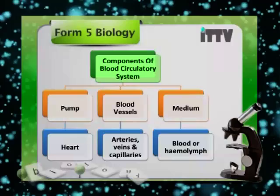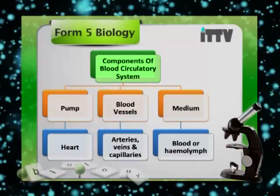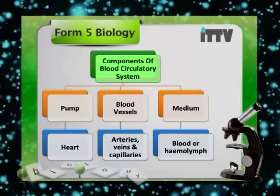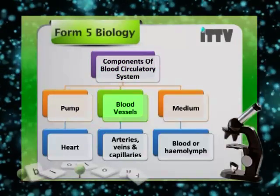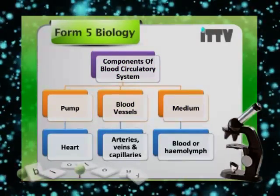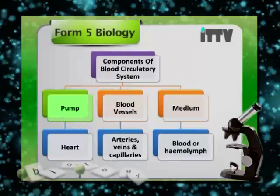What is a circulatory system? A circulatory system is the flow of fluids toward all the organs, tissues, and cells in an advanced organism such as a human or an animal, to transport the required nutrients and to eliminate the waste products. Now let us see what makes up the components of a blood circulatory system. The blood circulatory system comprises a pump, blood vessels, and a medium.